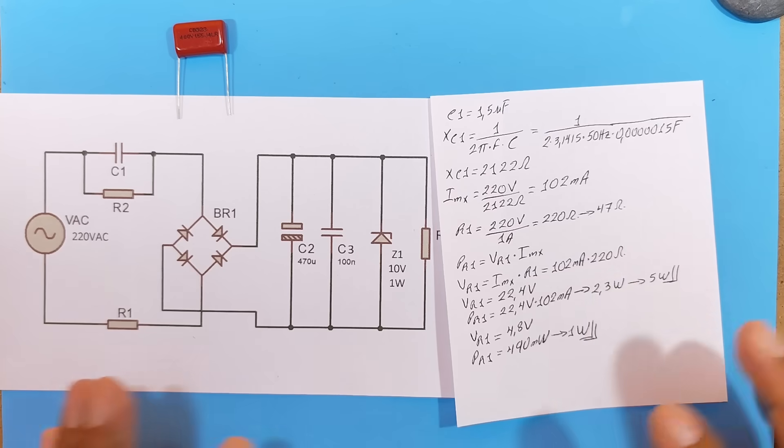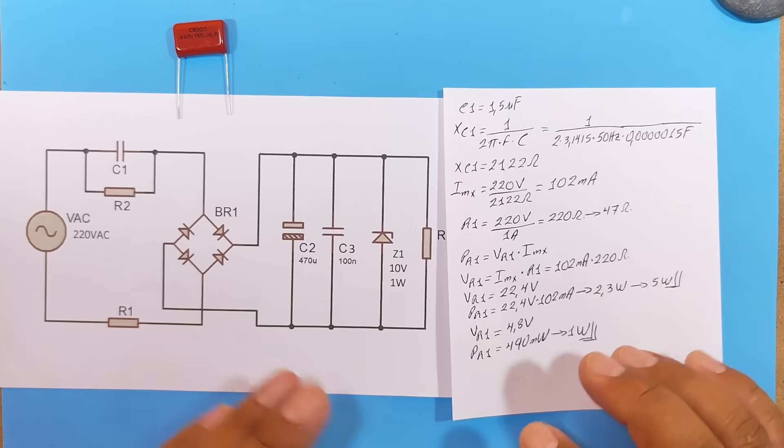Once all the values have been calculated, let's now use the multimeter to test the voltage drops and the current our capacitive source can deliver.